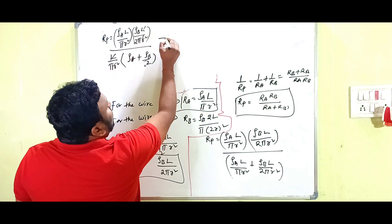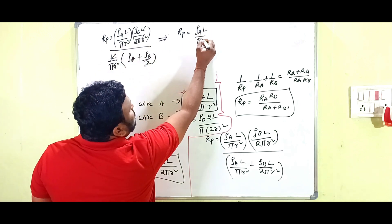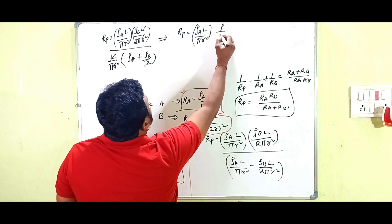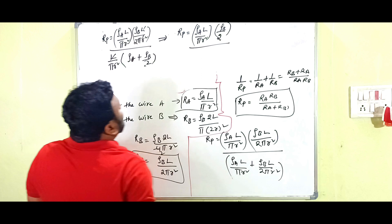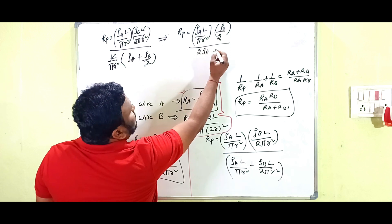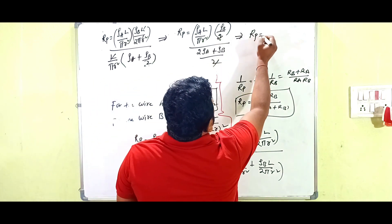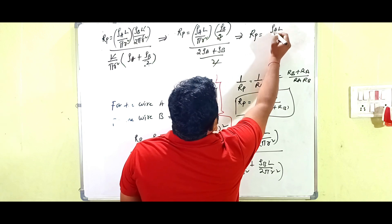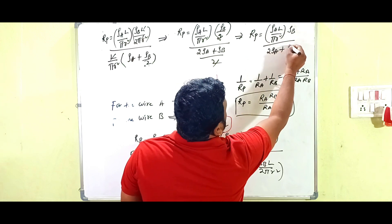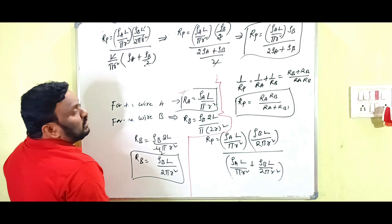The L by pi R squared terms cancel, giving R_P equals rho_A times L divided by pi R squared, multiplied by rho_B divided by (2 rho_A plus rho_B). This is the effective resistance of the parallel combination.